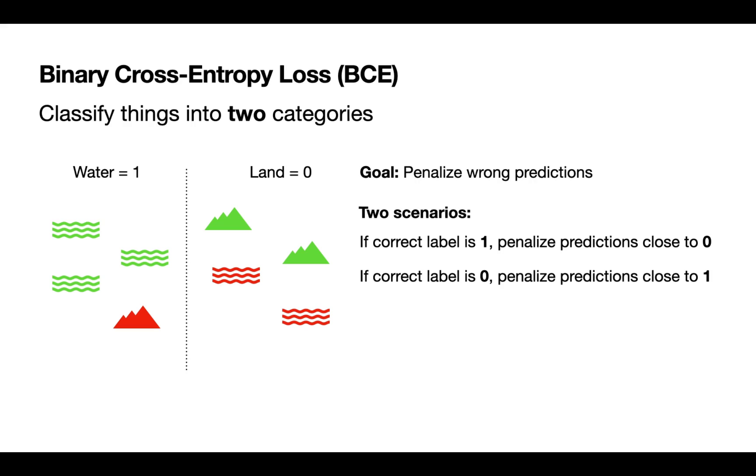If the correct label is one, so let's say we want to classify if something is water or land, we want to penalize predictions that are close to zero. If we represent water by one and land by zero, we have one example where we predicted something that was land but we predicted it to be water or vice versa. If the correct label is zero, we want to penalize predictions close to one.